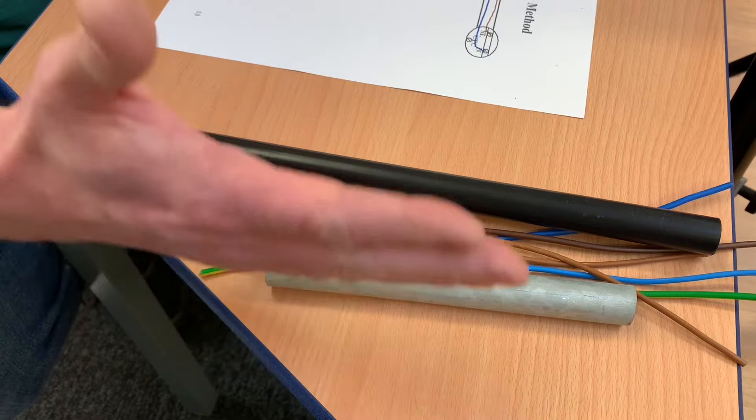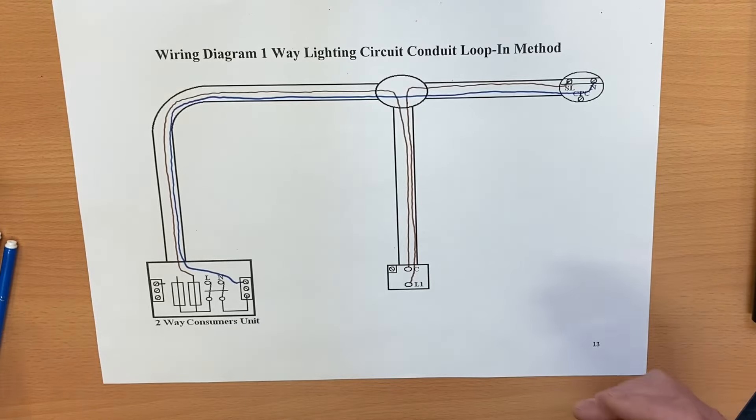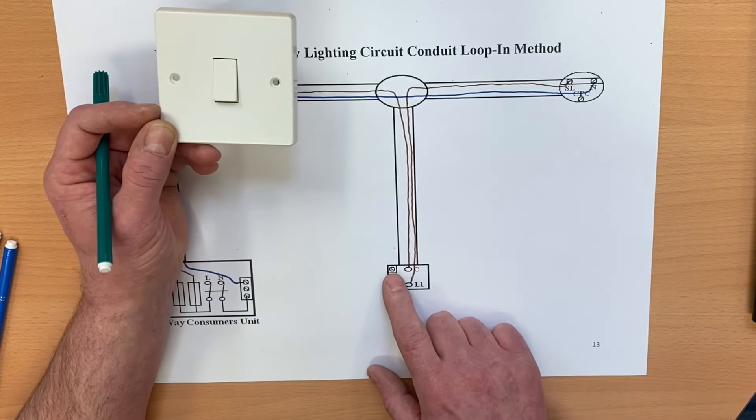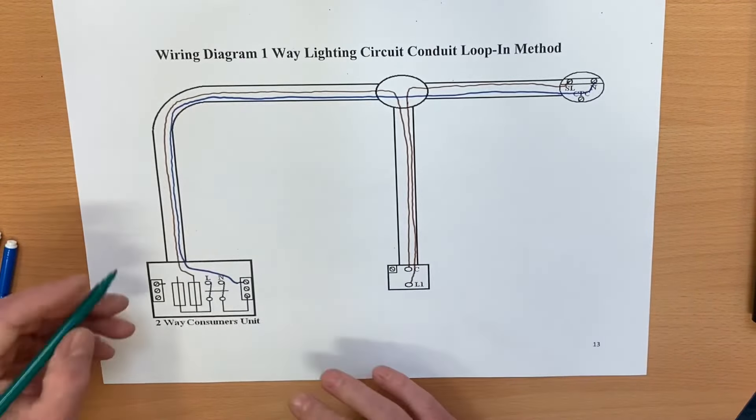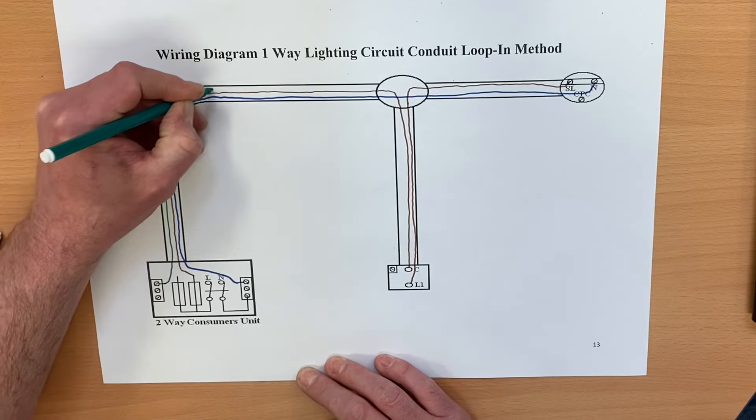We also use plastic switches as well in this conduit system. If there are plastic switches, there will need to be a CPC connection in the back of the switch box. It just depends what you're looking at when you're doing it. But let's bring the CPC around anyhow, so we're going to bring our CPC through our conduit system and connect it into here.